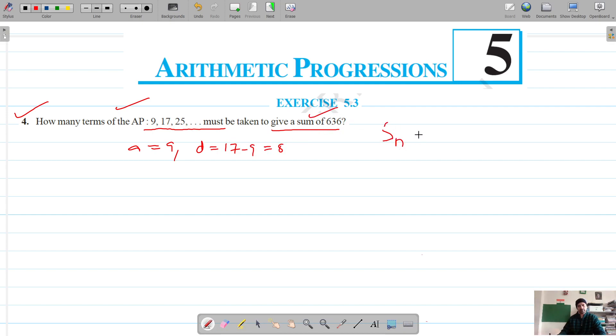So sum of, we don't know the term, so it's sum of first n terms. Sum of n terms is n by 2 into 2a plus n minus 1 into d, that is 636. And if you put in the values of a and d, so a is 9, so 2 into 9 plus n minus 1, n minus 1, and d is 8, it's 636.